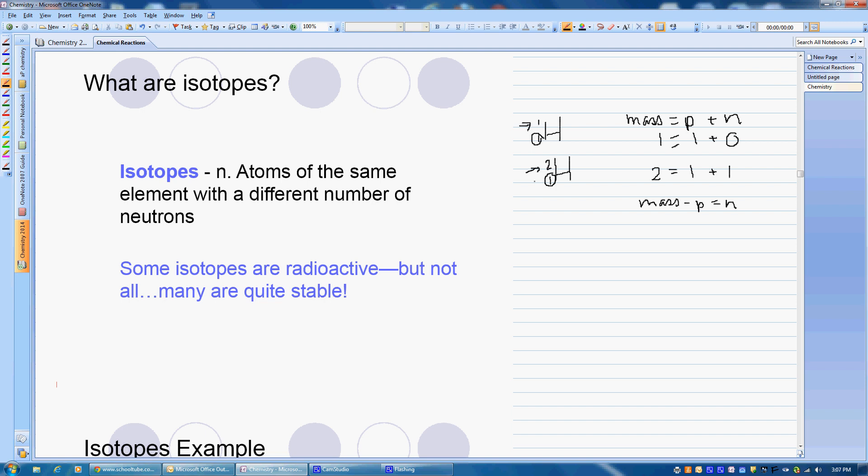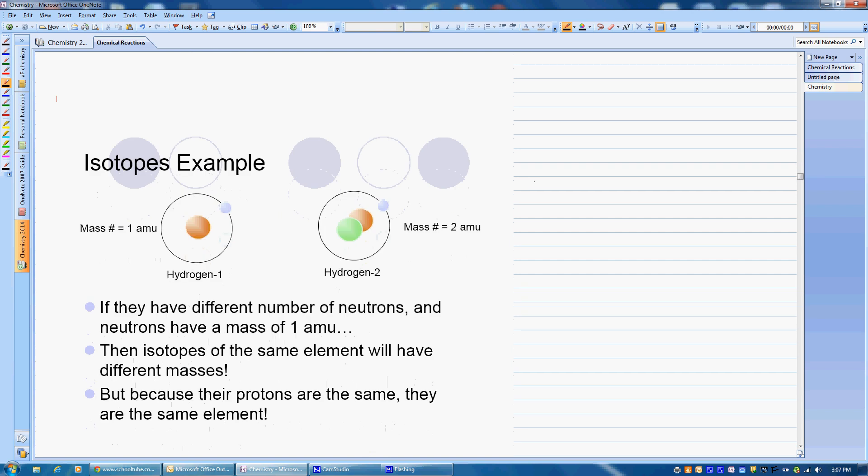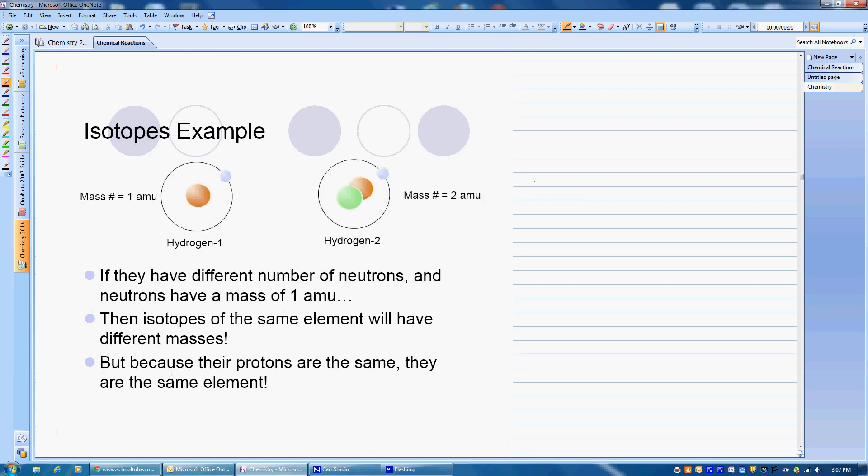Some isotopes are radioactive, but not all. Some of them are stable, but some of them are very, very radioactive. It just depends what isotopes we're talking about. Here's our example I just drew out to the side with our hydrogen that has 1 proton here. We could put a plus on here to show that that's our proton.